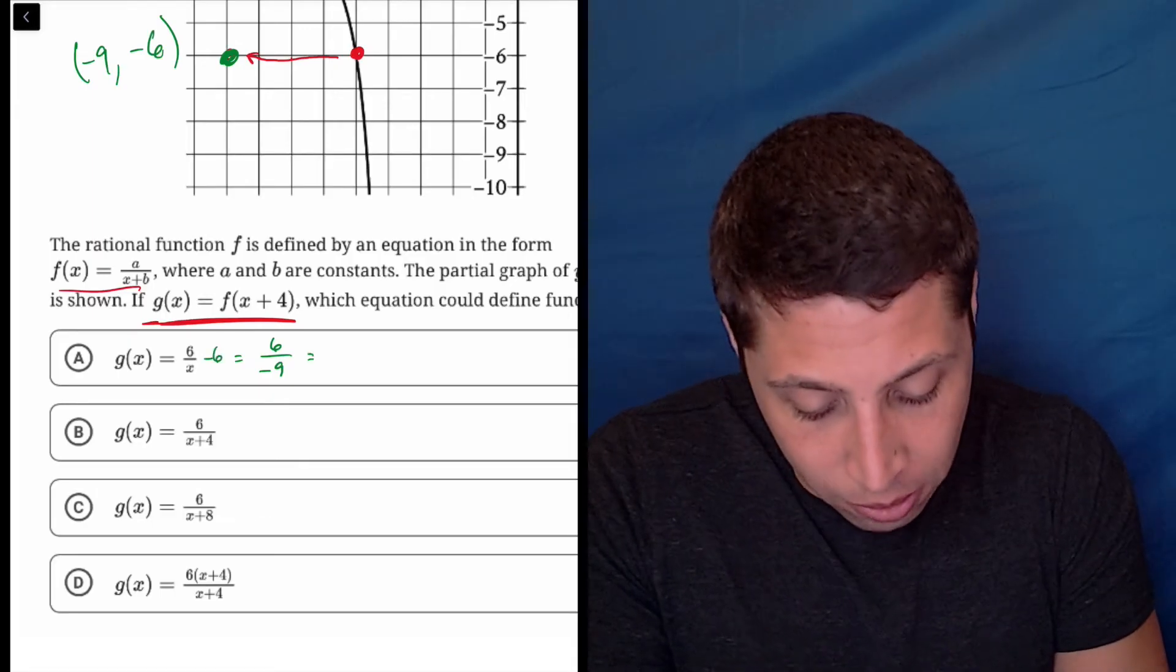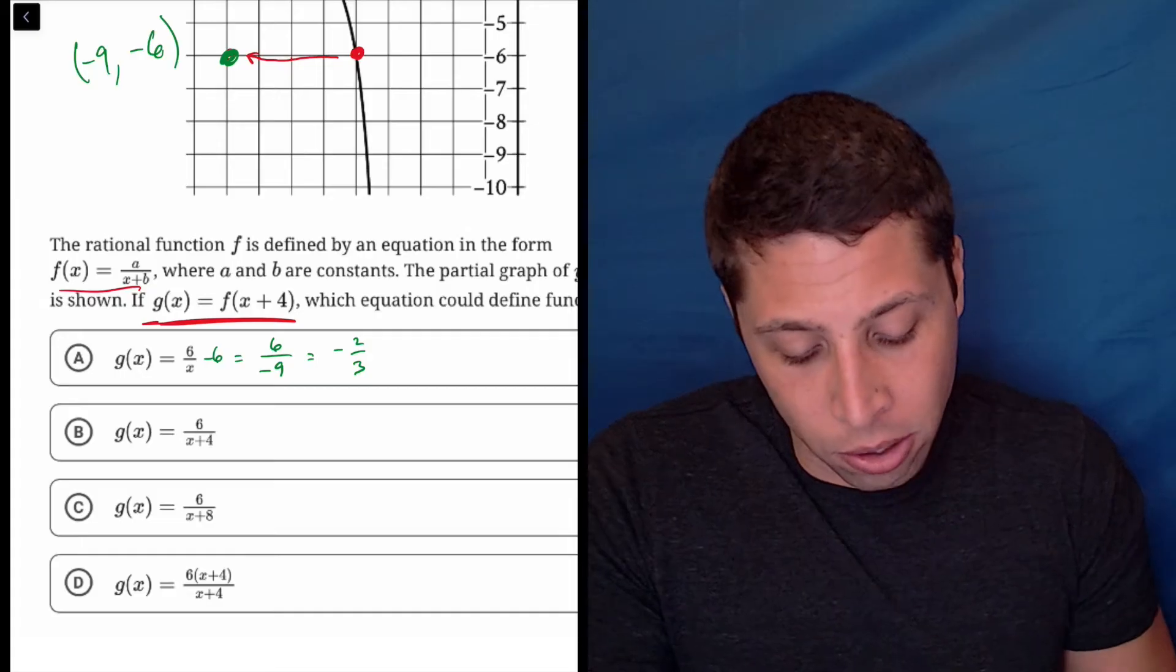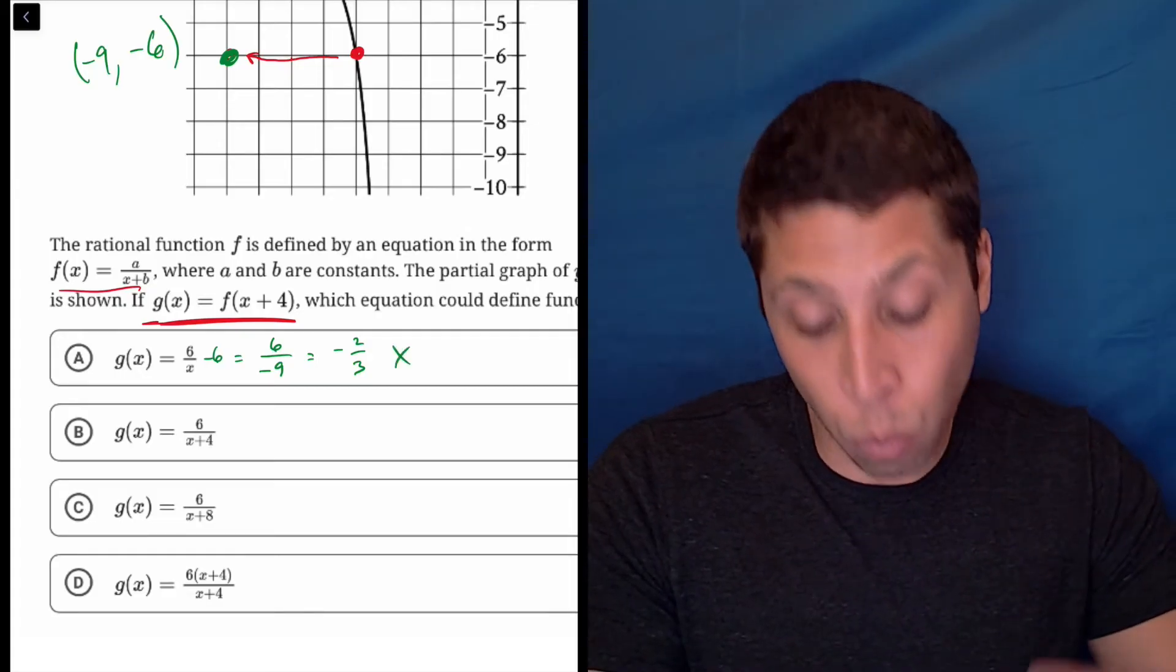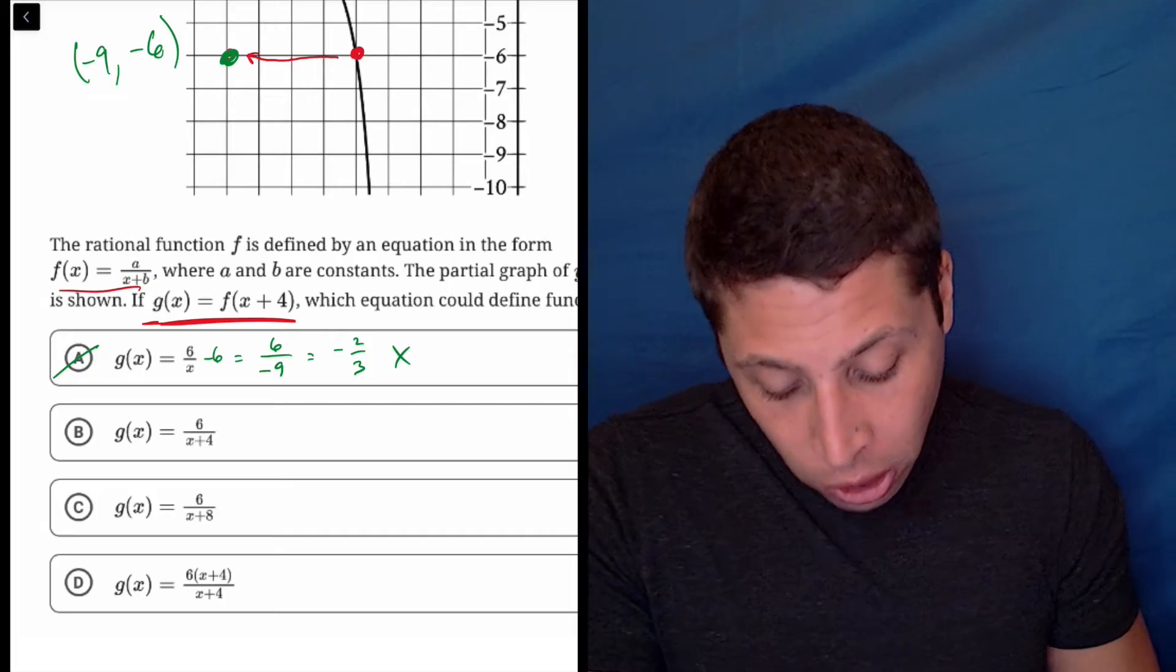six over negative nine is not equal to negative six. Those are different things. Six over negative nine is negative two thirds. So the fact that that's not producing the y coordinate that I want is not good. So let's just go down the line.